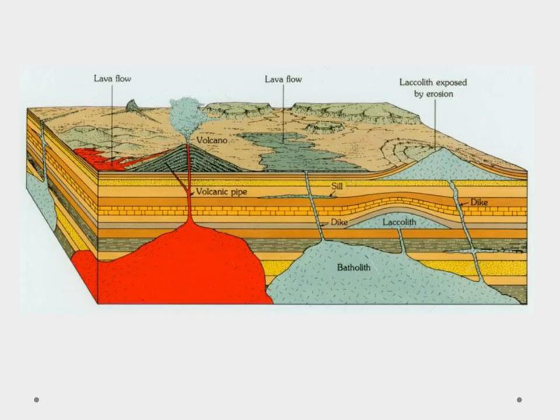Here we can see our plutons again. We have our sill here — notice that it's in between the layers. We have a dike that cuts across the layers, and then we have a laccolith, which bubbles up and deforms the layers above it.